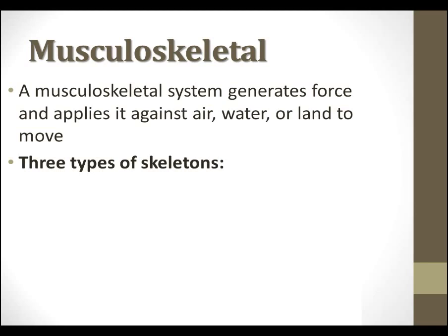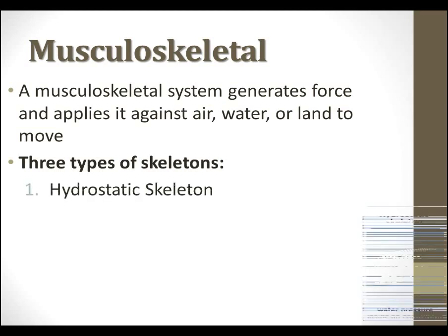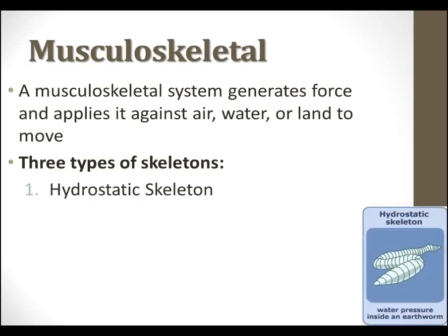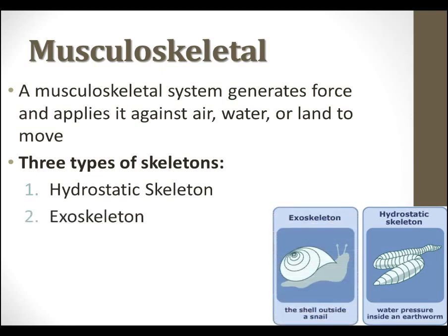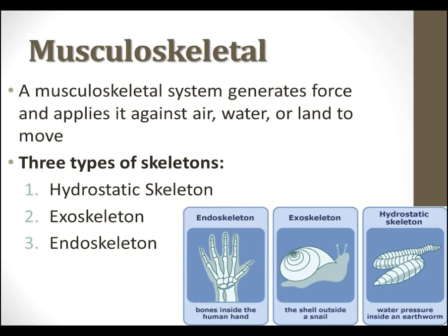We have three types of skeletons that we're going to be talking about. The first one is going to be the hydrostatic skeleton, which is essentially water pressure inside an earthworm. The second one is going to be an exoskeleton, something you'd see like the shell on the outside of a snail, or Tony Stark's Iron Man — that'd be an exoskeleton as well. Or finally, the endoskeleton — that's what we have, where you have bones inside your body.